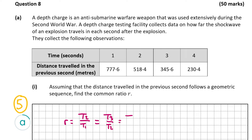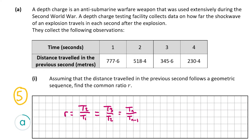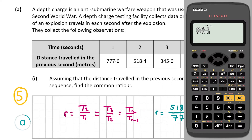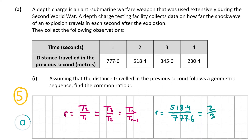A formula for r is t_n divided by t_(n-1). In our case, t2 is 518.4 and t1 is 777.6, so we do 518.4 over 777.6. Putting that into the calculator we get 2 over 3. Therefore r is equal to 2 over 3, and that's our answer for part a1.